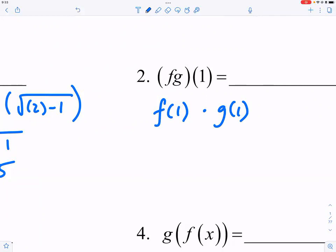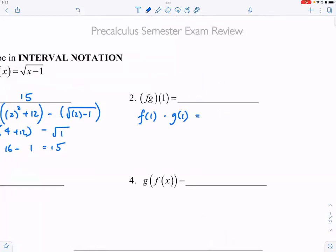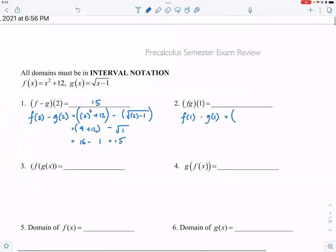So we will show our F of one, which is one squared plus twelve, times square root of one minus one.